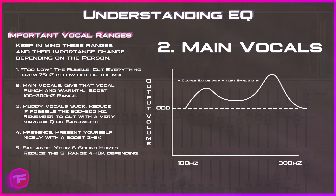Step two is to boost your main vocal ranges. I place a couple of bands: one at around 120 Hz and one sitting right around 275 Hz. I boost the 120 Hz band a few decibels and then boost the 275 Hz a few more decibels — both with a fairly tight bandwidth, similar to the graph on screen. This brings up the punch and warmth in your vocals. I highly suggest using a program like Spectralissime to monitor the frequency ranges and find exactly where your main vocal range sits.